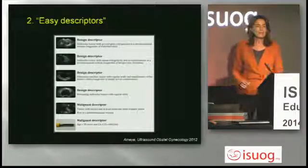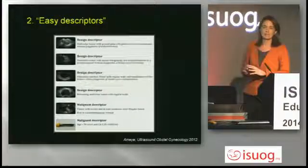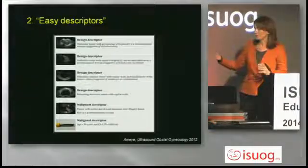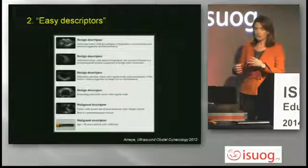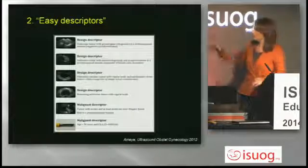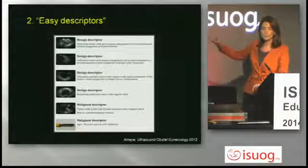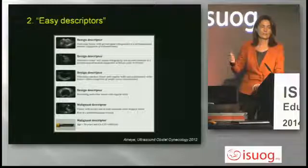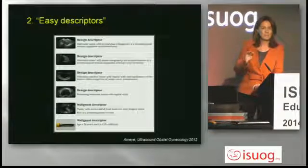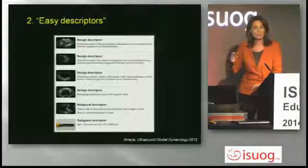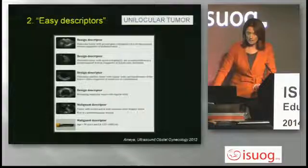Then we have easy descriptors. You perhaps talked about that yesterday. The four descriptors are very useful to make an instant diagnosis in front of a unilocular cyst — not only to say benign, you can also make a specific diagnosis, an instant diagnosis. Let's try together.